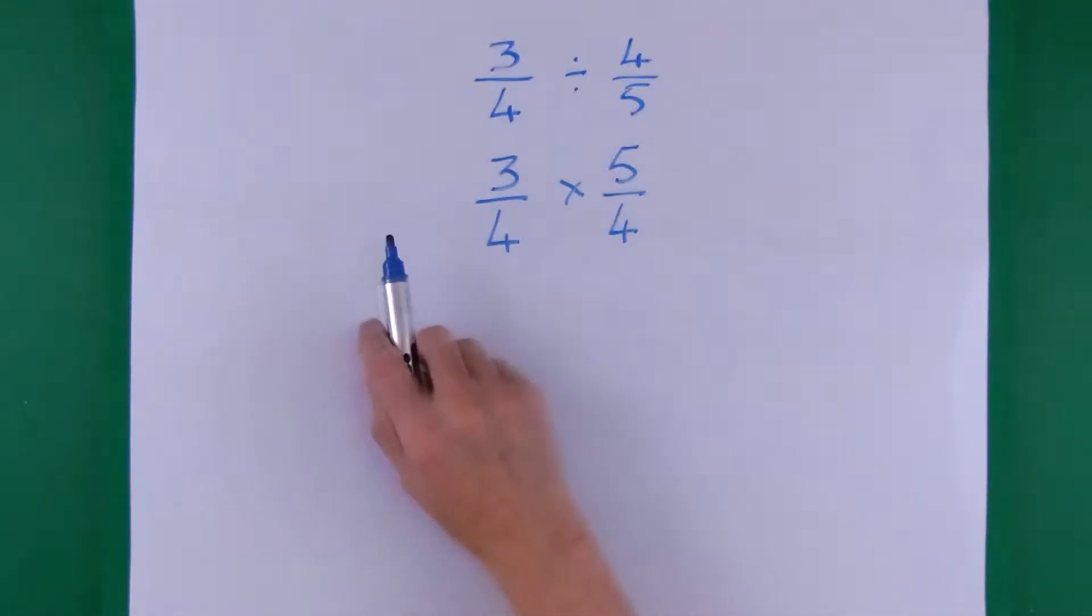Now we've got a simple times fractions. So we just go 3 times 5 is 15. 4 times 4 is 16. And that's our answer. 15 sixteenths. It's that easy.